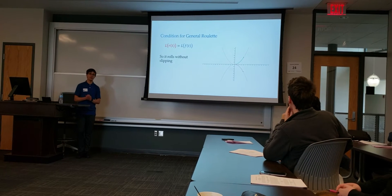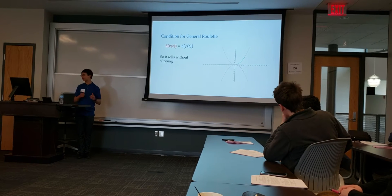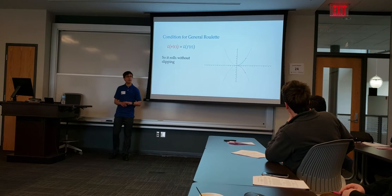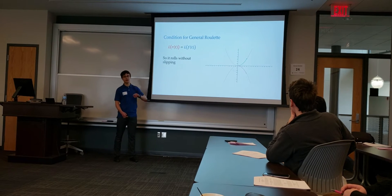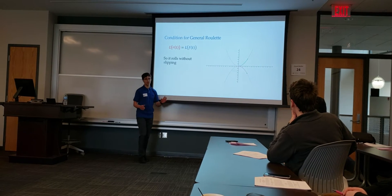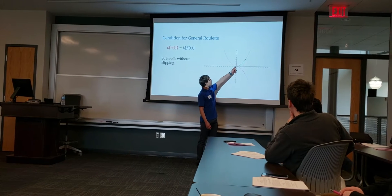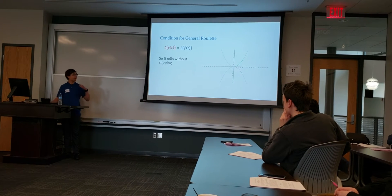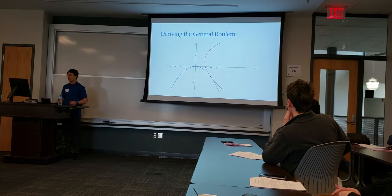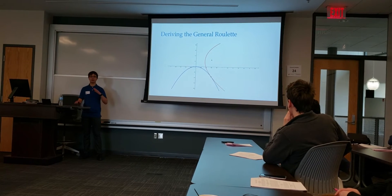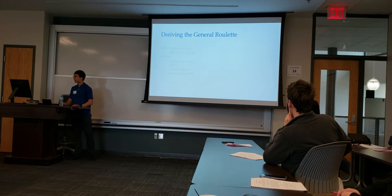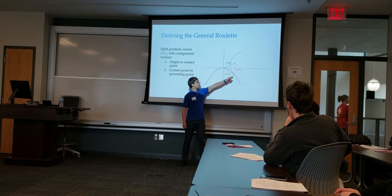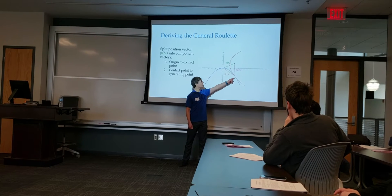Now we look for the general roulette. What if we don't have a circle, but something else? What if we don't have a line, but something else? The only condition, at least that I know of, is that the length of the two arcs has to be the same at any time t — they have to be parametrized in a way that these arc lengths are equal. Once we have a parametrization, we let the rolling curve roll through a specific time t-naught, and we split the position vector of the generating point at time t-naught into two components: from the origin to the point of contact, and then from the point of contact to the generating point.